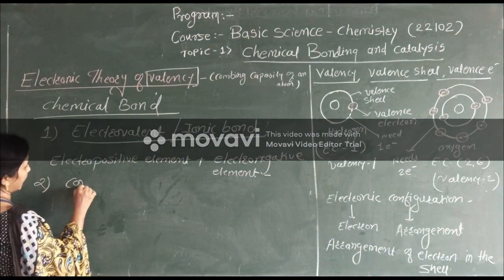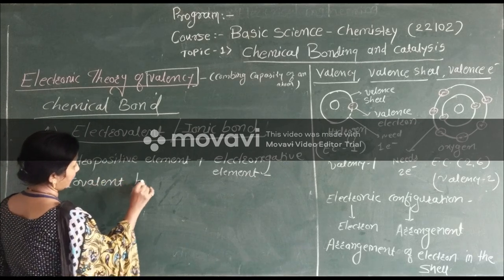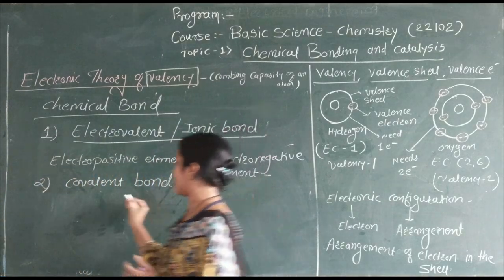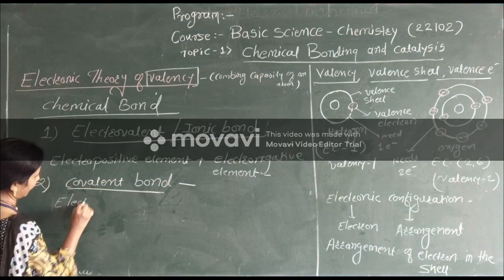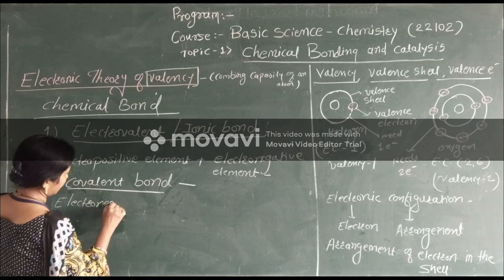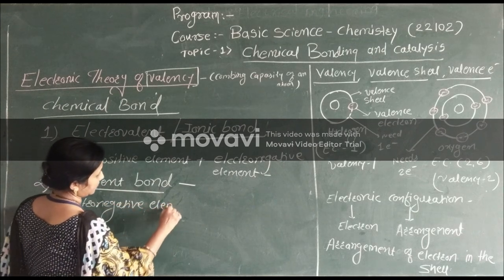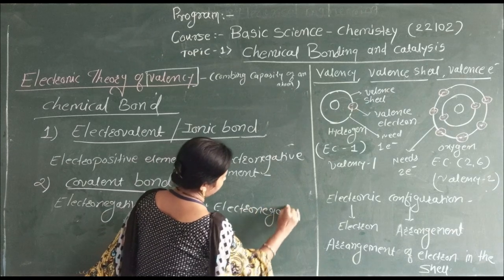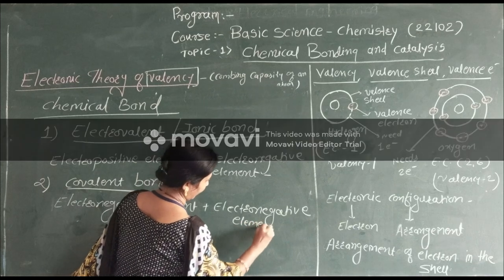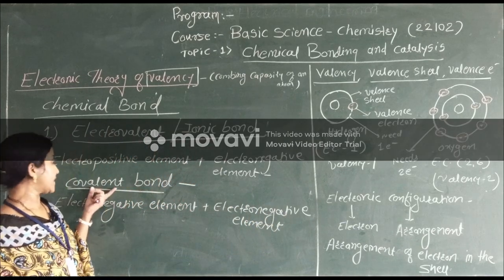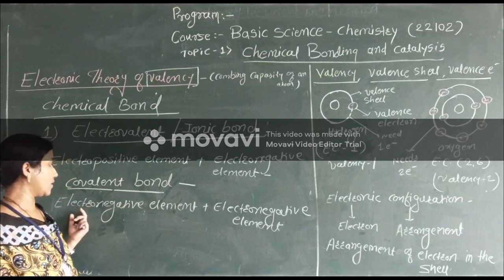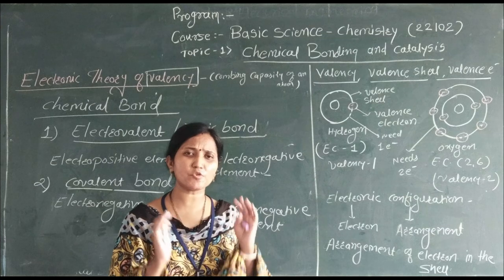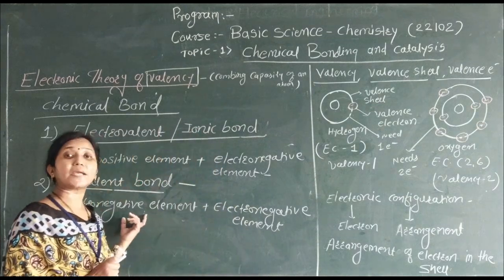The second type is the covalent bond. Covalent means cooperative sharing. A covalent bond involves electronegative element plus electronegative element. In this case, there is mutual sharing of electrons between both electronegative elements, which is called a covalent bond.